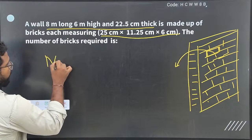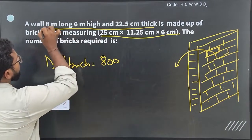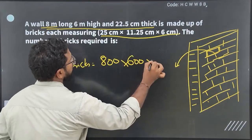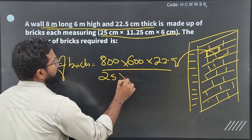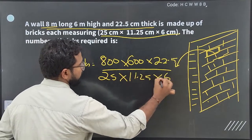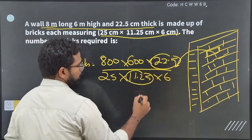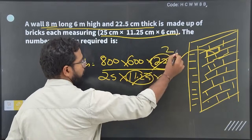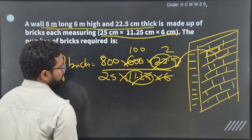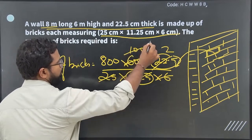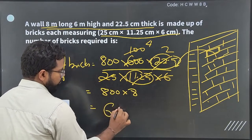Same concept. Number of bricks: I am taking 8 meters as 800 centimeters, 6 meters as 600 centimeters, and 22.5 centimeters as is. Divided by 25 × 11.25 × 6. Notice that 11.25 and 22.5 are connected — 22.5 is double 11.25, so it cancels to give factor of 2. 600 divided by 6 is 100. 800 divided by 25 is 32. Remaining is 800 × 8, giving the answer of 6400 bricks.